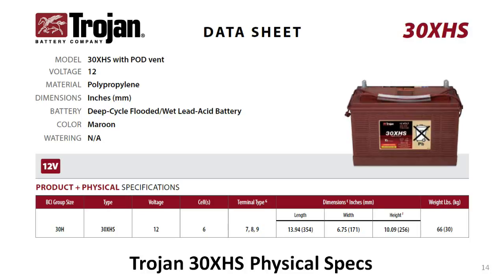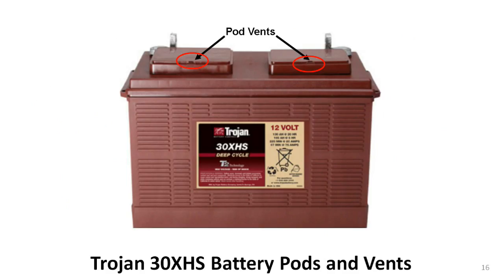Here's the top section of the front page. Starting at the top left, just under the Trojan logo, there is the model number 30XHS and the words 'pod vent.' Trojan has chosen to call the cell covers pods, and each cover has a small hole at the top center of the front edge — those are the pod vents. They allow gases to escape from inside the battery and are your tip-off that the 30XHS is not a sealed battery, so if you turn it over, the electrolyte will spill out.